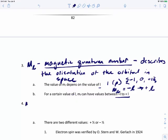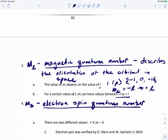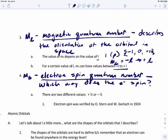And then M sub S, the last one, this is called the electron spin quantum number. Basically what we're looking at is which way does the electron spin. It's going to have two values, plus one half or minus one half. If it's plus one half, then it's spinning clockwise. If it's negative one half, it's spinning counterclockwise. And electron spin was verified by the scientists Stern and Gerlach in 1924.